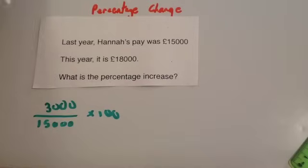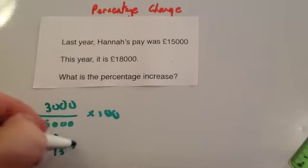Alternatively, on a non-calculator test, I would recommend cancelling down this fraction. So divide by 1,000 to get rid of the zeros. So you get 3 over 15 times 100.